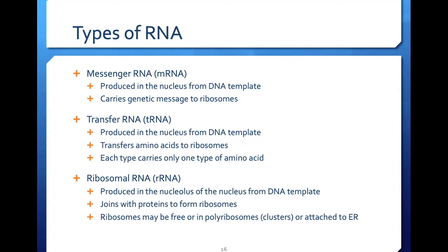Transfer RNA, or tRNA, is also produced in the cell nucleus of eukaryotes. Appropriate to its name, tRNA transfers amino acids present in the cytoplasm to the ribosomes. There are 20 different amino acids, and each has its own tRNA molecule. At the ribosome, a process called translation joins the amino acids to form a polypeptide chain.